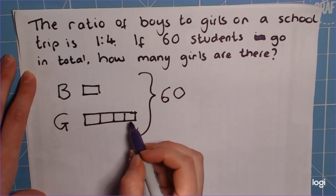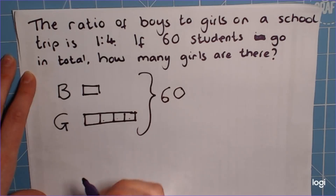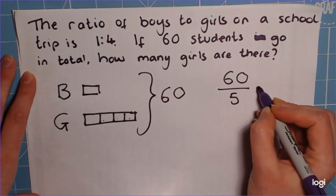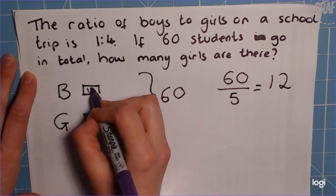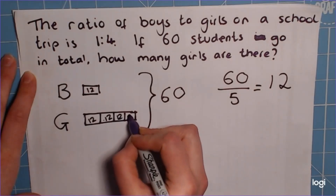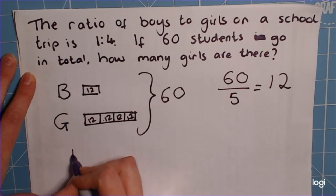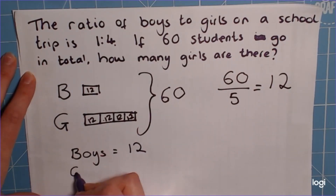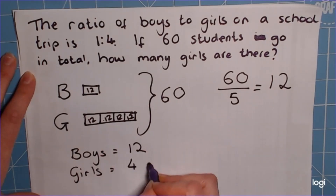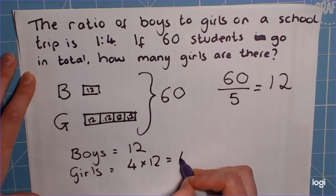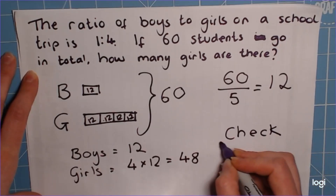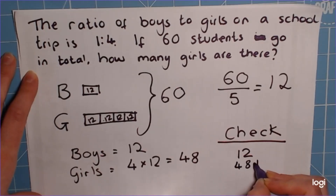We're going to split it into our little boxes — we've got 5 little boxes in total that need to be split up equally. So we can do 60 divided by 5, which is 12. Each little box is worth 12 students on this trip. So the boys get just 12. And the girls get 4 times 12, which is 48. Let's do that last check: 12 and 48 — that gives us 60. We've not lost anybody on the way, so that's good.